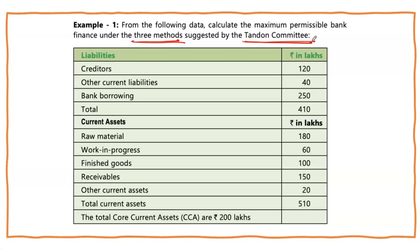The given information is: liabilities — creditors and other current liabilities total 160, bank borrowings 250, total 410. Current assets — raw material, work in progress, finished goods, receivables, and other current assets total 510. Total core current assets are 200 lakhs, which is applicable only for the third method.